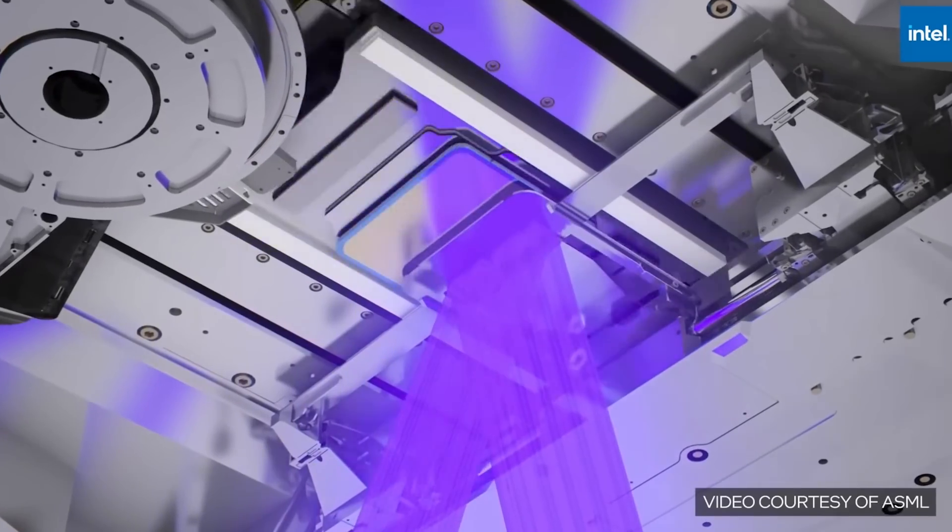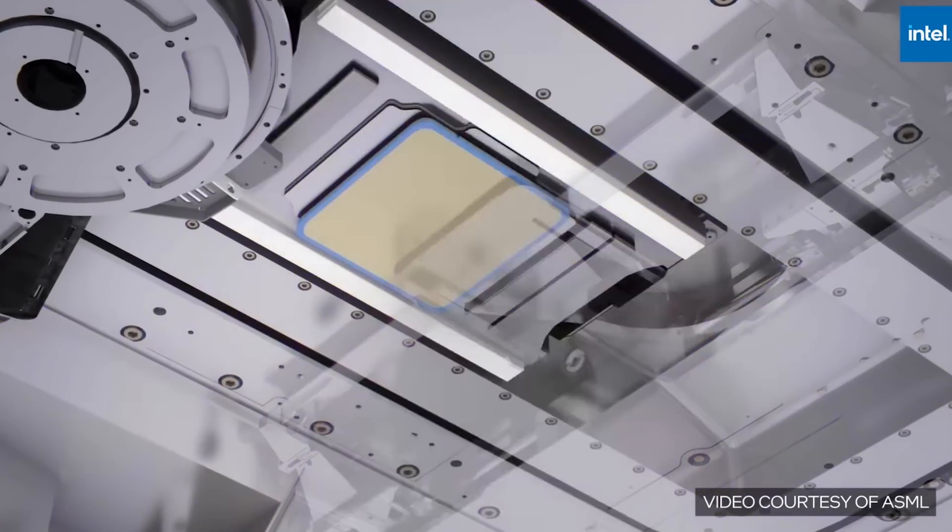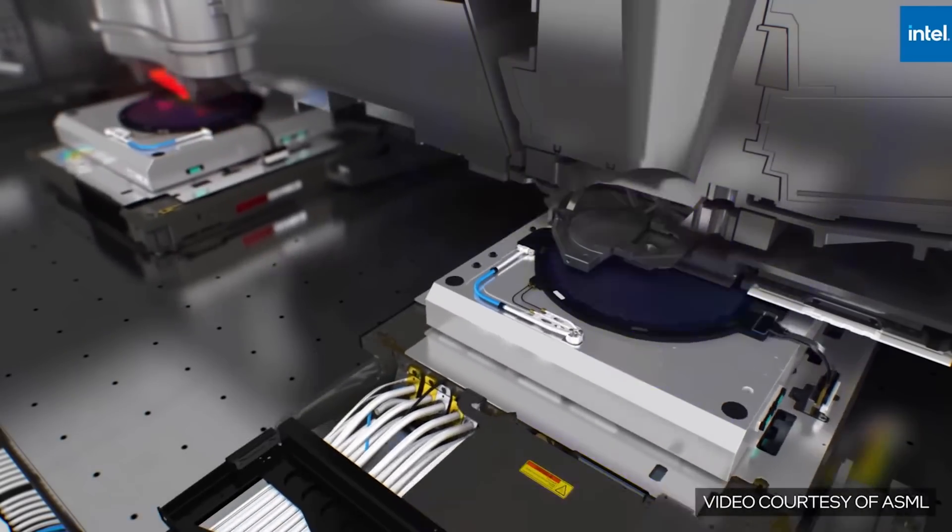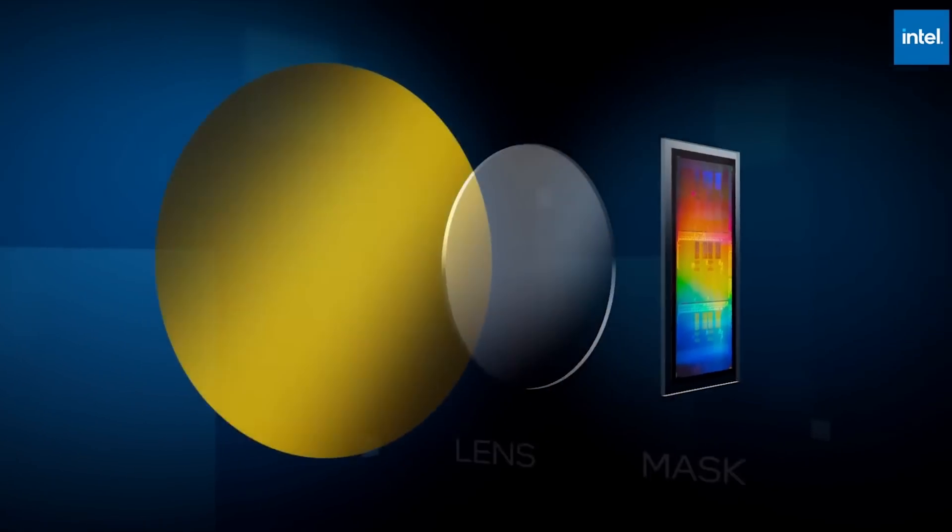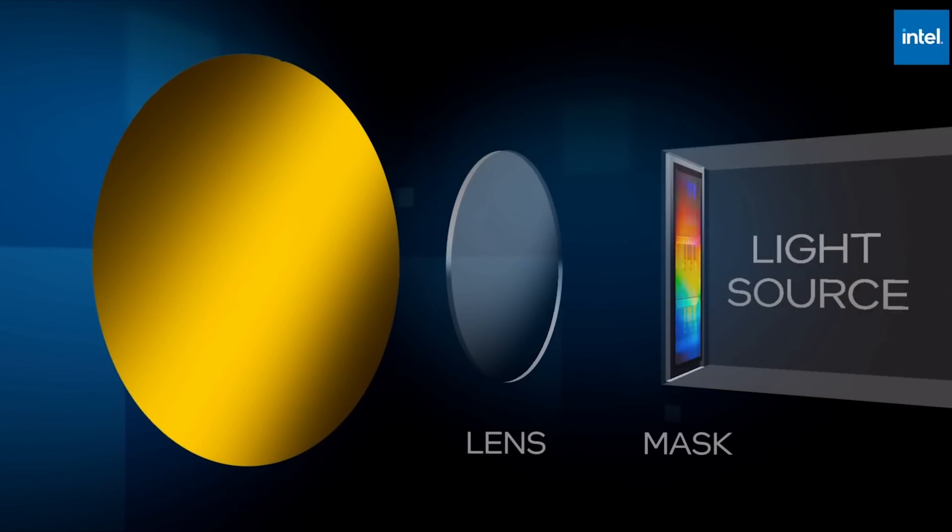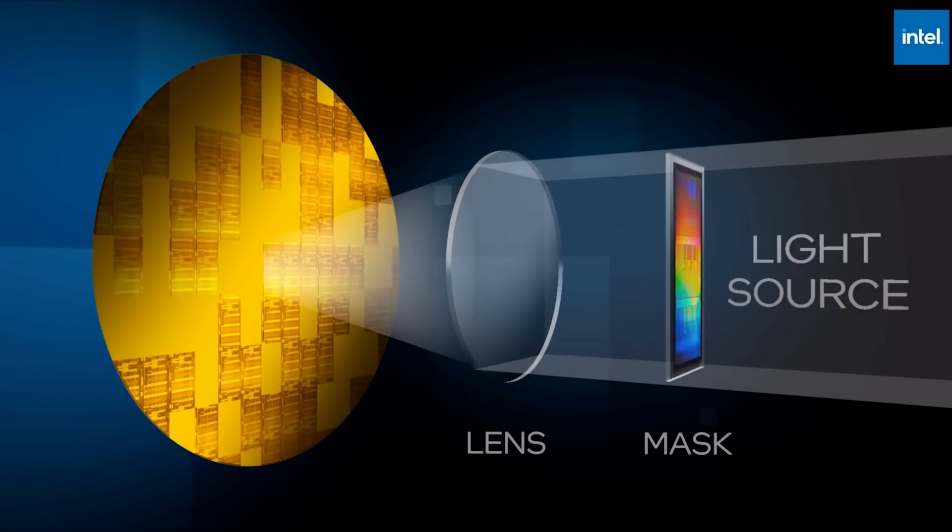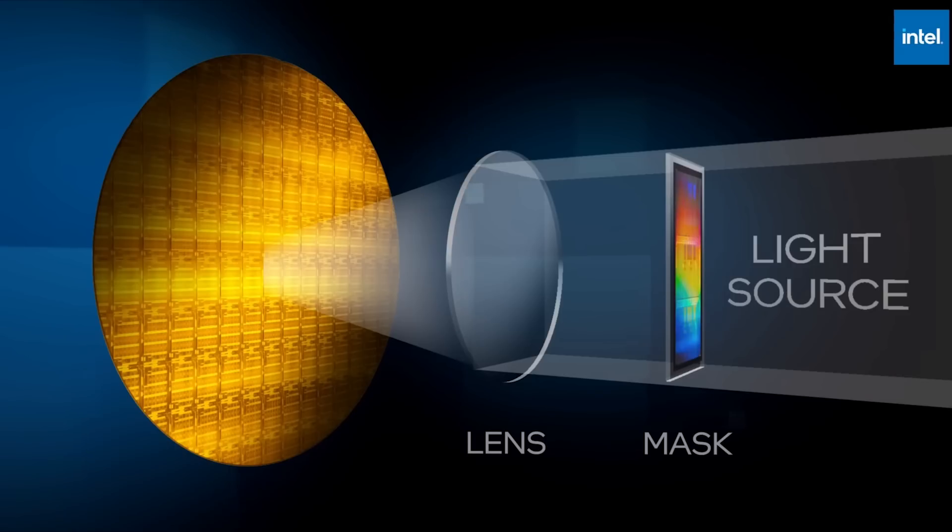Extreme UV required an entirely new form of lithography machine. The existing versions used traditional glass lenses to focus light under the silicon wafer. The problem is, EUV light is absorbed by glass. Glass stops extreme UV dead in its tracks.